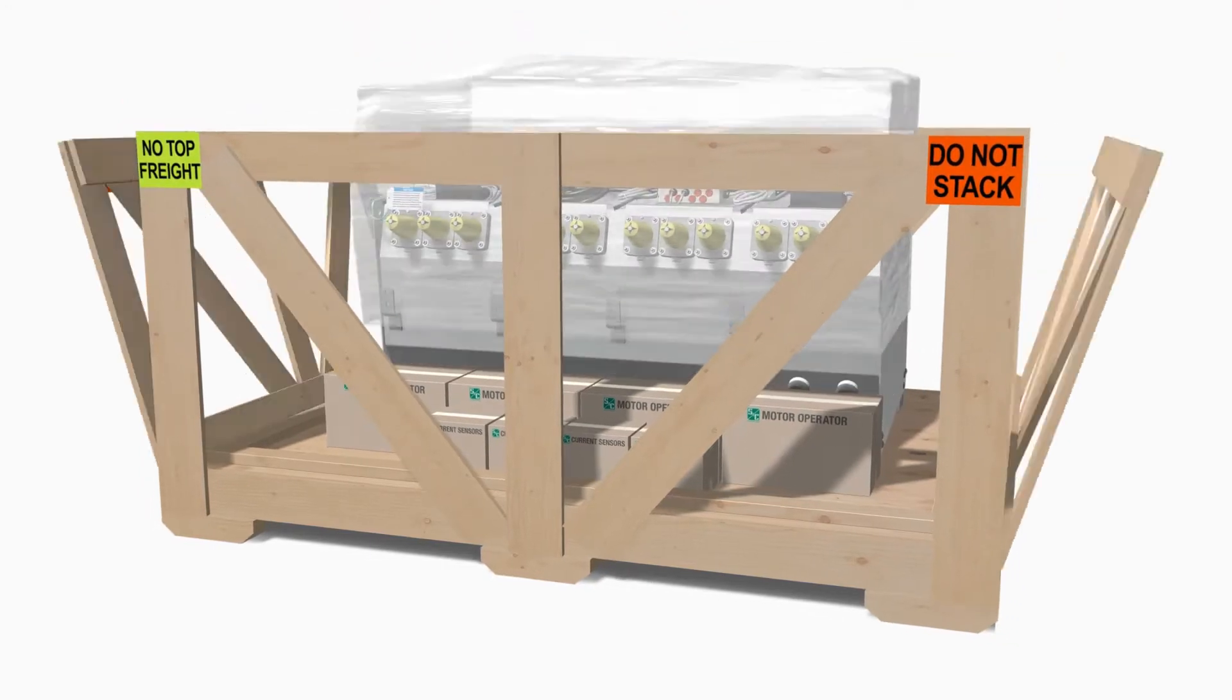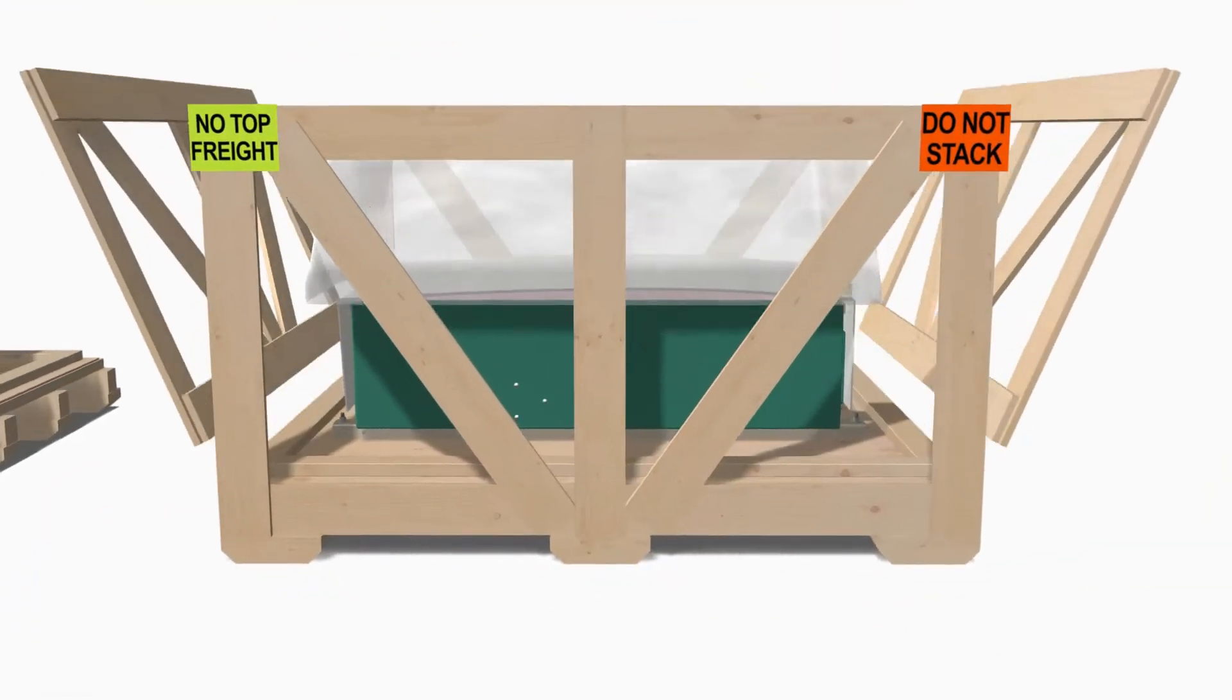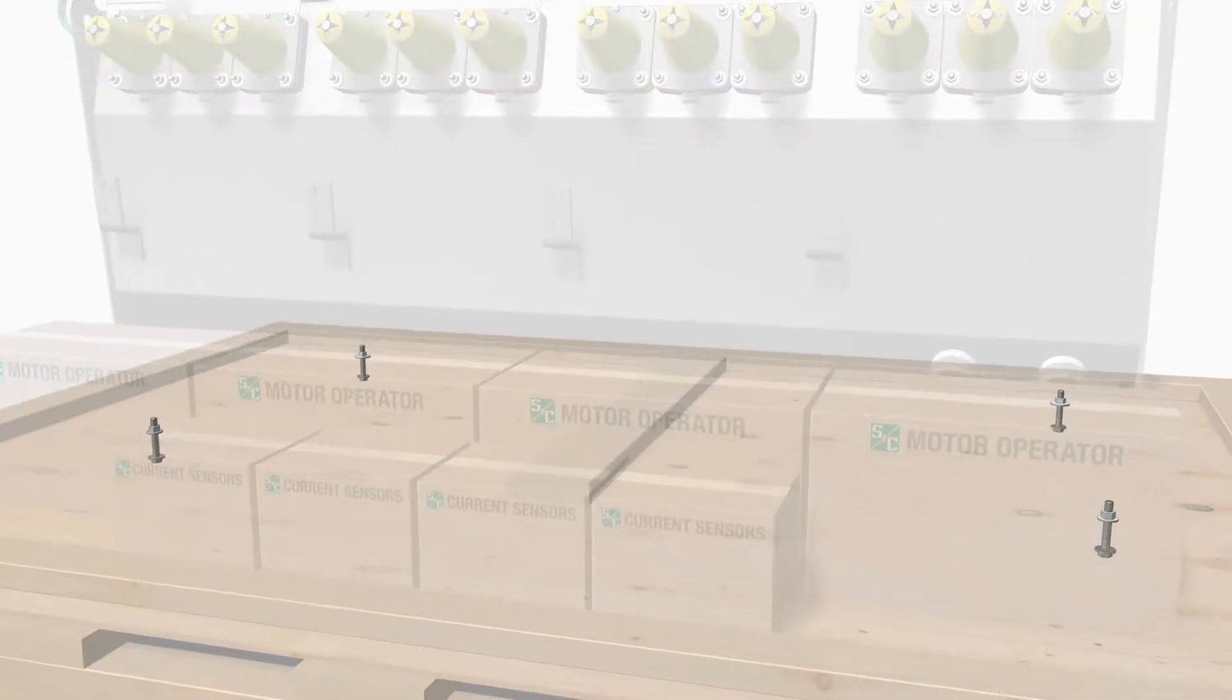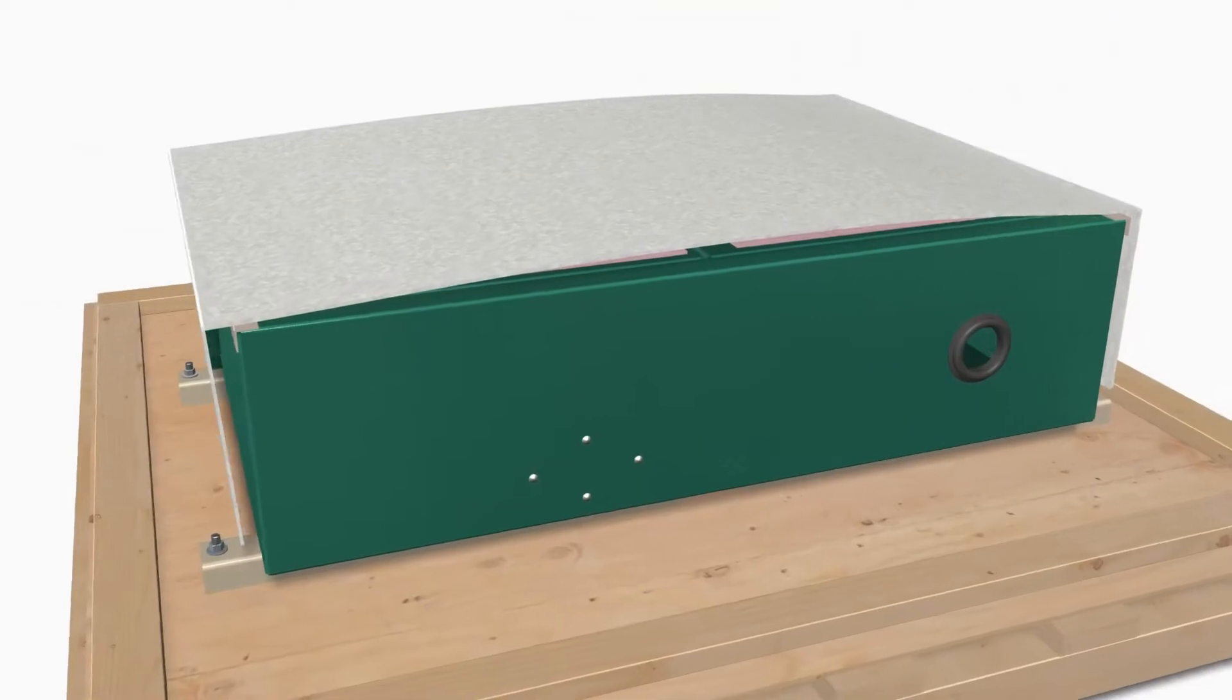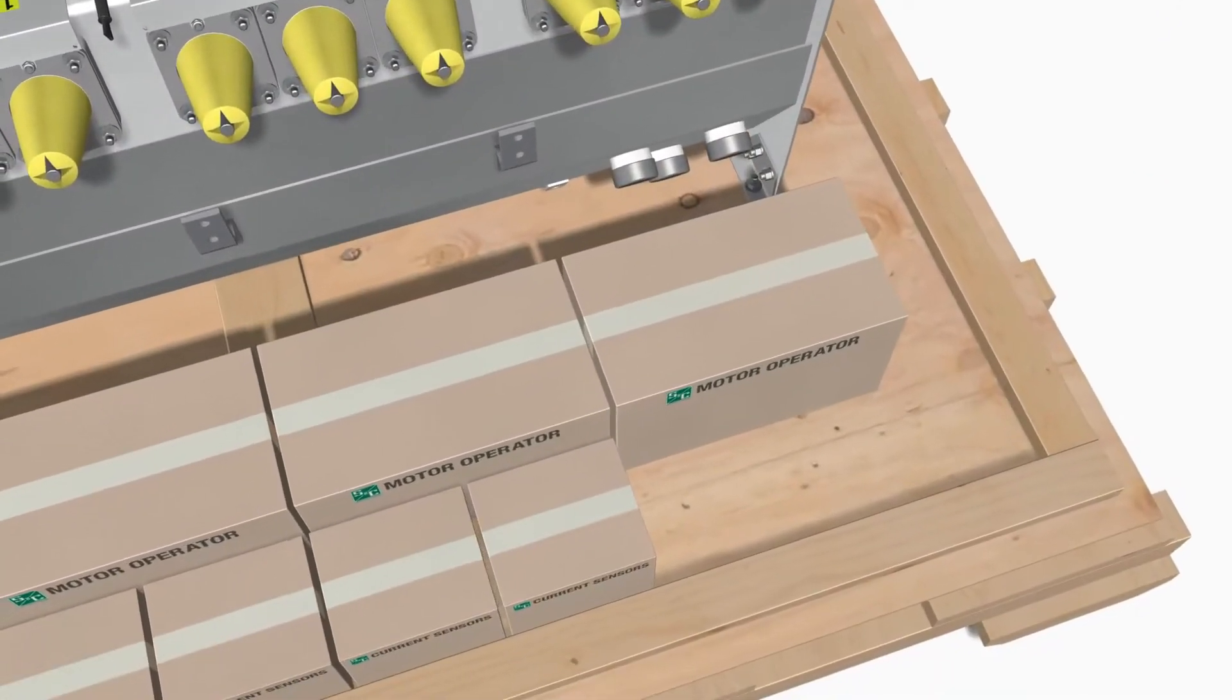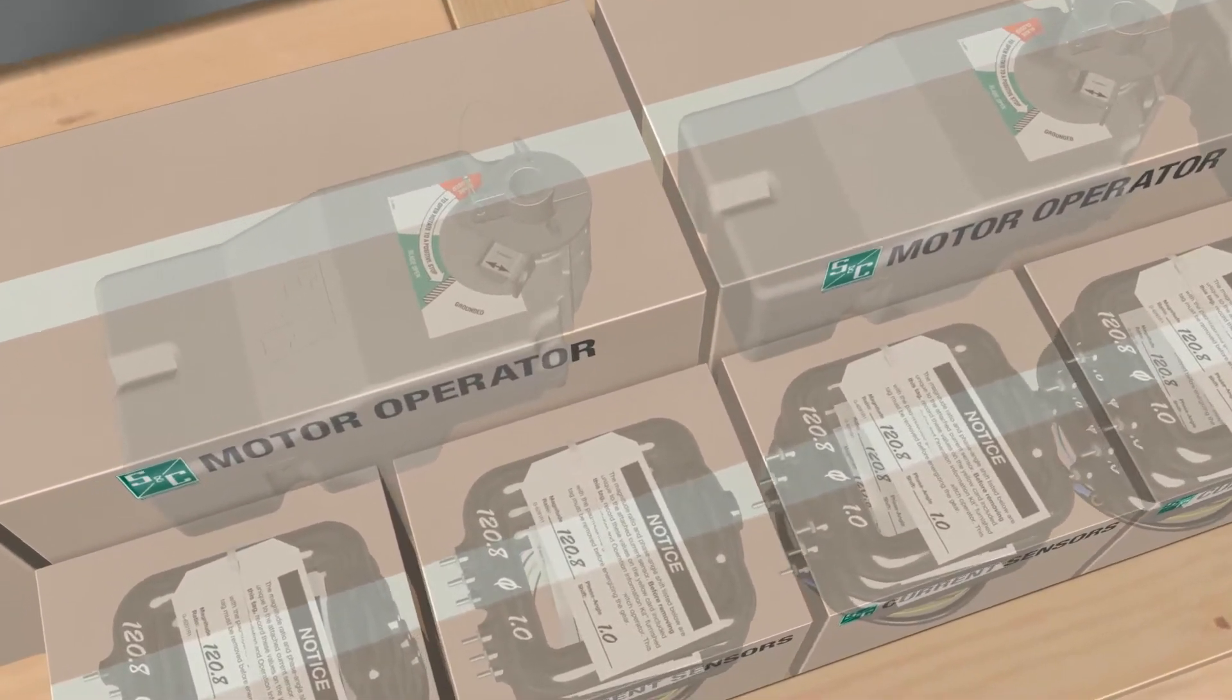Dry and wet vault-mounted style switchgear consists of the tank and the low voltage enclosure. Each is fastened to its own wooden skid. Motor operators and current sensors are individually packed and shipped in boxes.